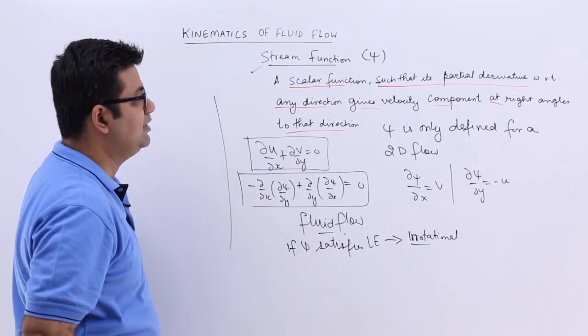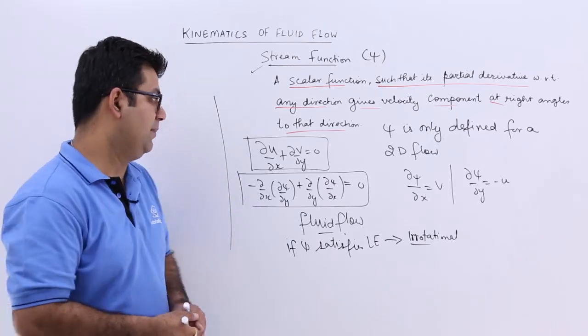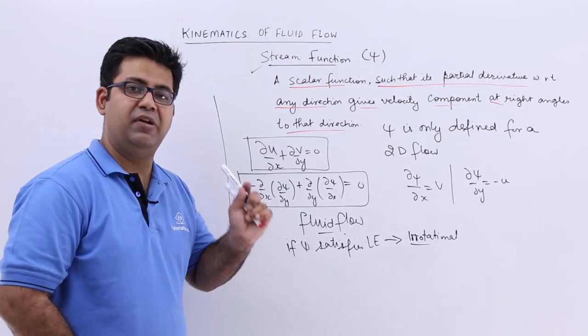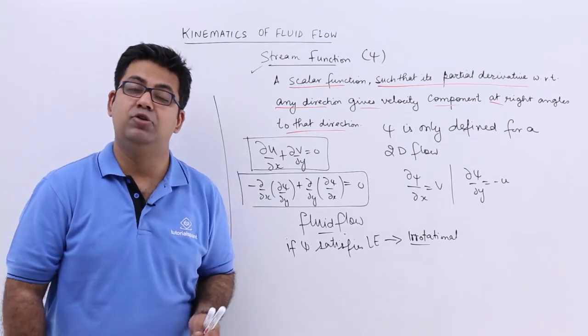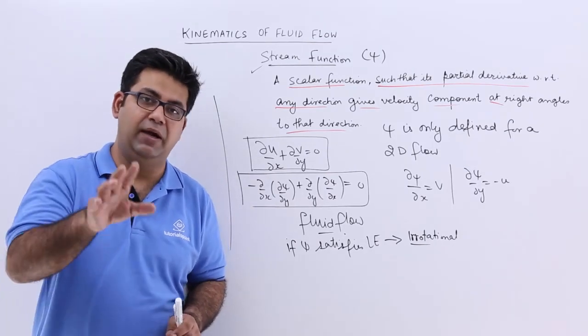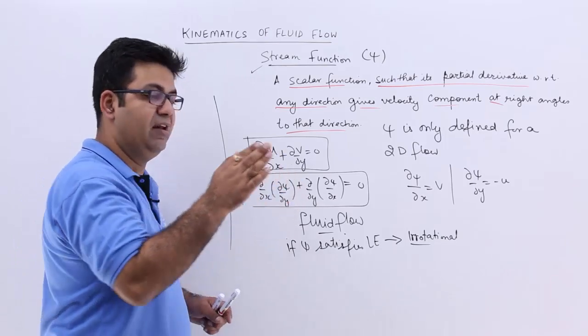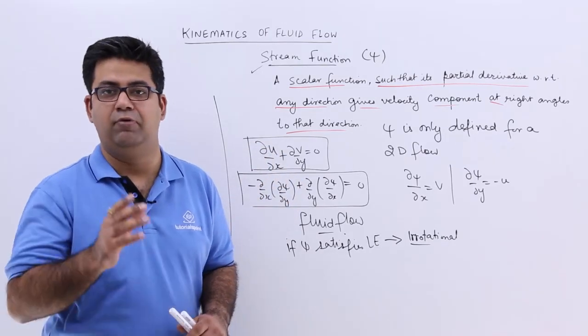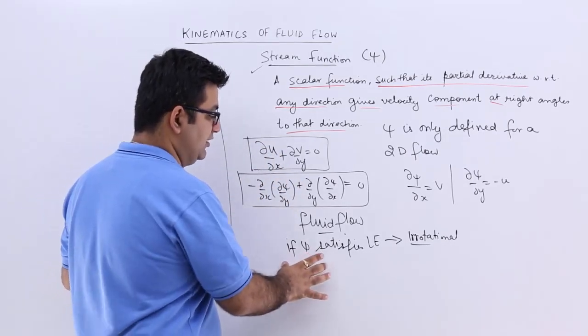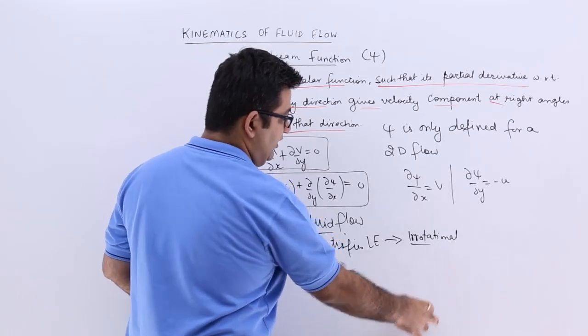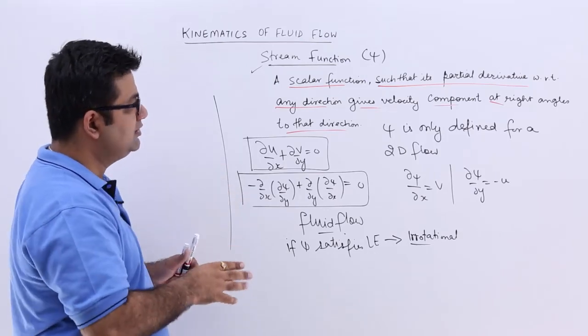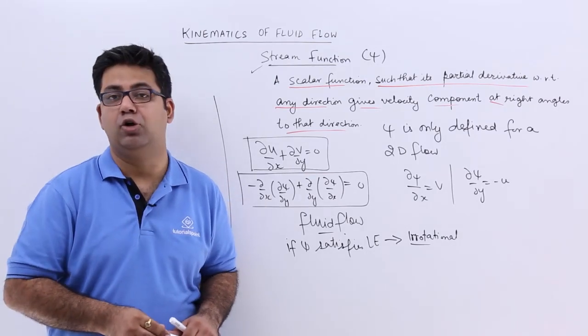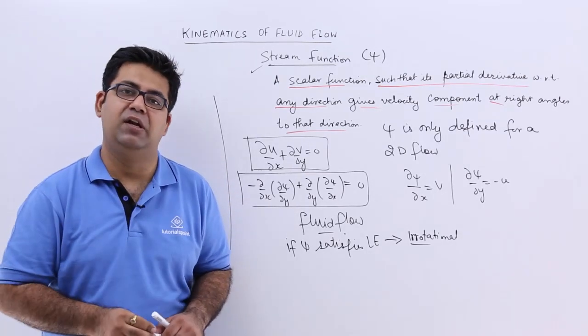So this is a very basic and easy topic to understand. Remember this, that whenever the stream function exists, you cannot tell whether the flow is going to be rotational or irrotational, but you can tell that there will be a definite case of a fluid flow. Then if it is satisfying the Laplace equation, then the flow becomes irrotational. So I hope you understood this. Now let's move on to the next topic and talk about the equipotential line.